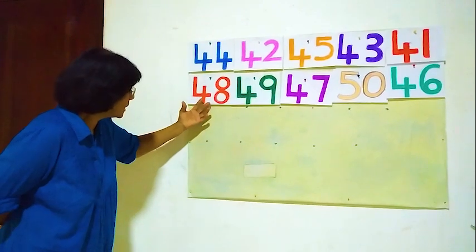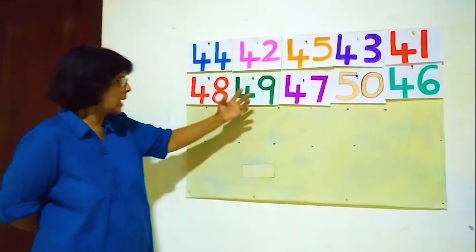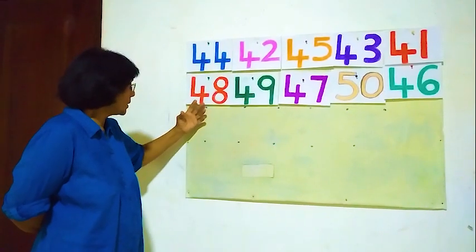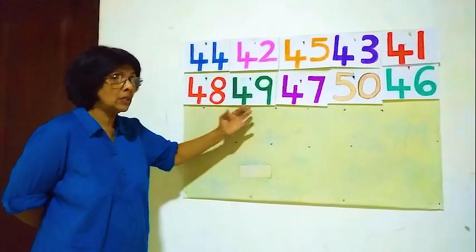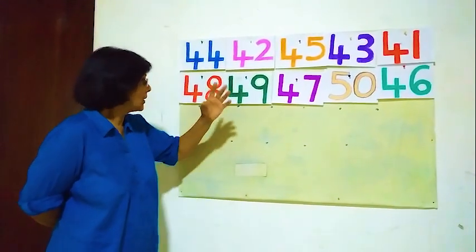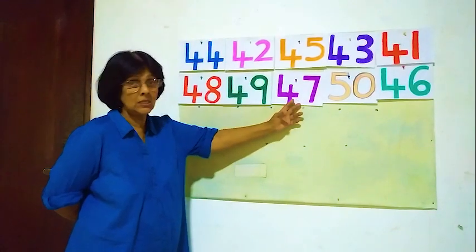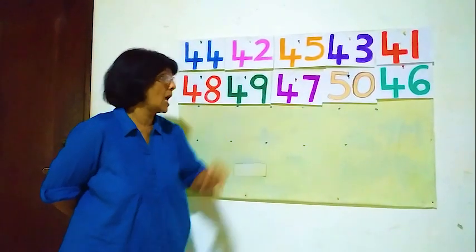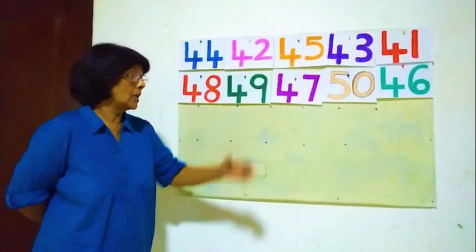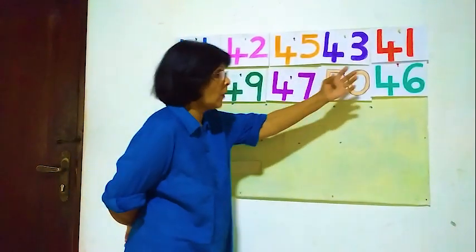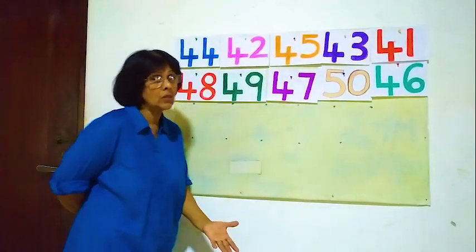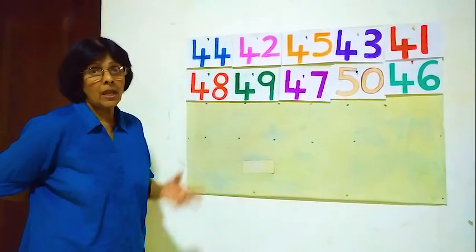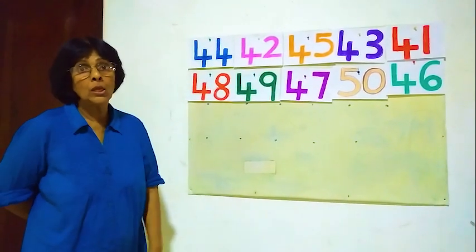After 48, 49 — is it correct? Yes, that is correct. After 48, 49 — that's okay. But after 49, 47 is here — that is wrong. After 47, 50 is there — that was wrong. After 50, 46 is there — that was wrong. You have to find the correct number and put them in order.